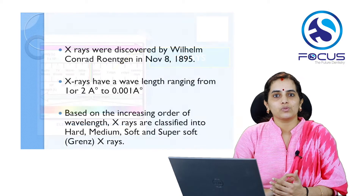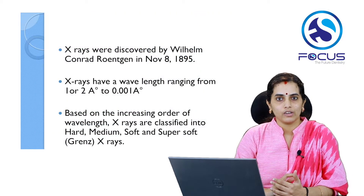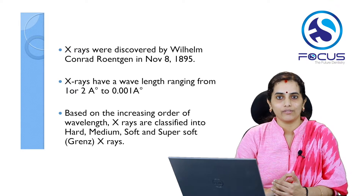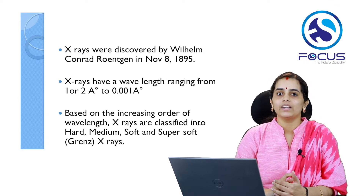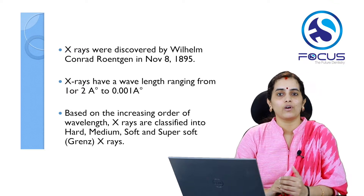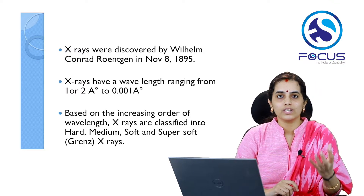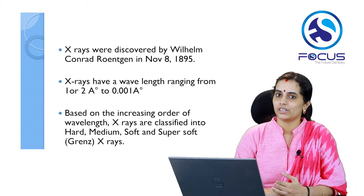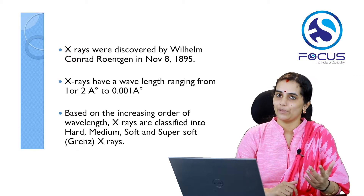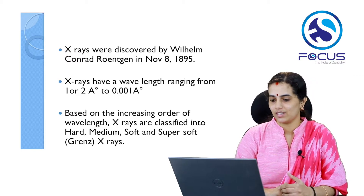X-rays were discovered by William Conrad Roentgen on November 8, 1895, when he was working on a discharge tube where he accidentally found fluorescent radiation emitted by unknown rays. He named them X-rays.